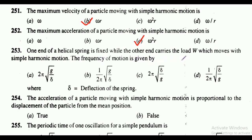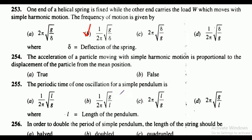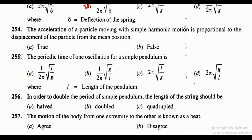Question 253: one end of a helical spring is fixed while the other end carries the load W, which moves with simple harmonic motion. The frequency of motion is given by the options shown, where delta equals deflection of the spring. The correct answer is option B, that is 1 upon 2 pi into under root of g upon delta.